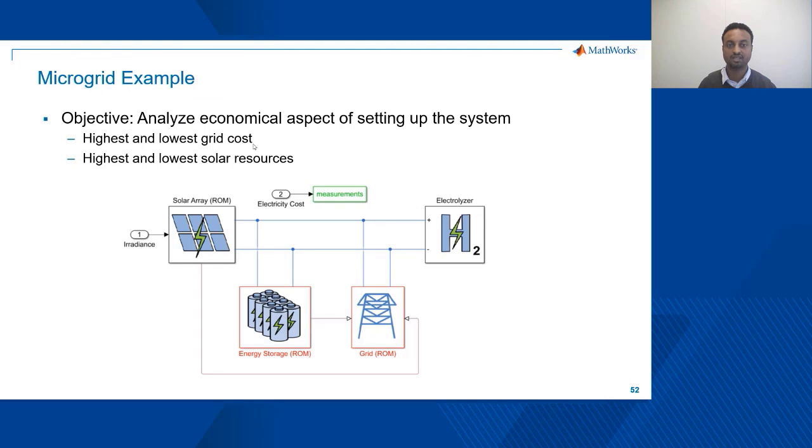Once we have replaced other components like the energy storage and the grid with a reduced order model equivalent, we can create a complete system model that's ready for techno-economic analysis. The inputs to our model are two things: the irradiance of that specific location, and the electricity cost at that location.